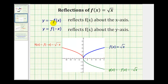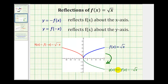y equals negative f of x, or the opposite of f of x, reflects f of x across the x-axis. So if our parent function is f of x equals the square root of x and we graph the opposite of f of x, or negative square root of x, notice how it reflects the parent function across the x-axis. One way to remember this is: by changing the sign of the function — and remember the function values are y values — so we're changing the sign of the y coordinates, therefore reflecting the function across the x-axis.